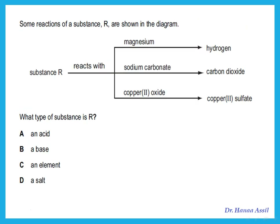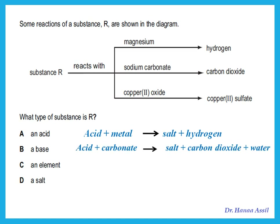Some reactions of substance R are shown: it reacts with magnesium (a metal) to give a salt, with a carbonate to give carbon dioxide gas, and with a base to give a salt. A substance that reacts with a metal to give salt plus hydrogen, with a carbonate to give salt plus carbon dioxide plus water, and with a base to give salt and water — that substance must be an acid. So R is an acid.